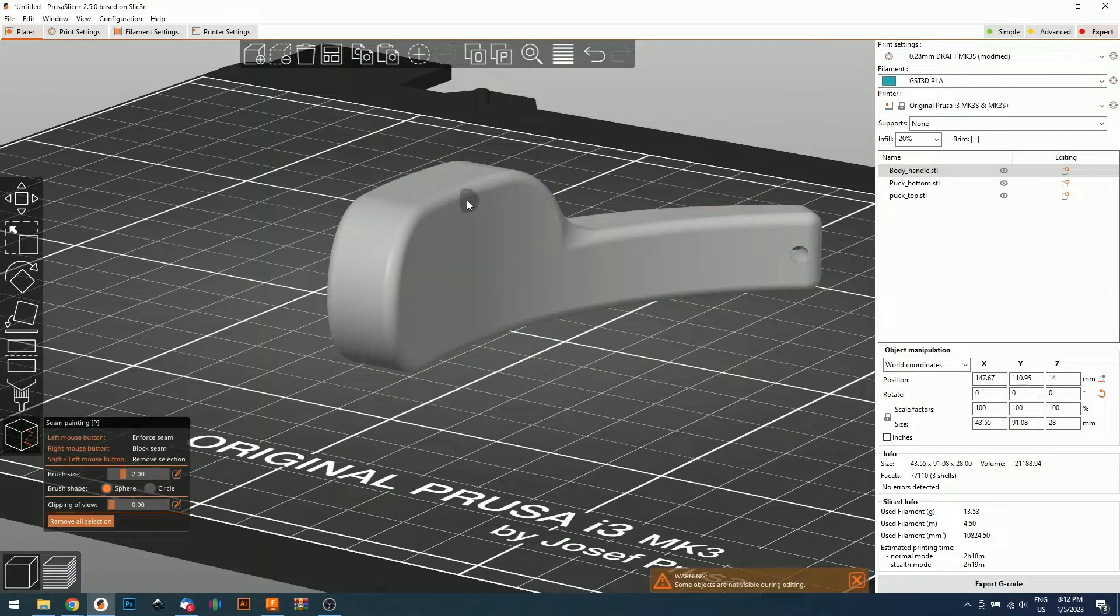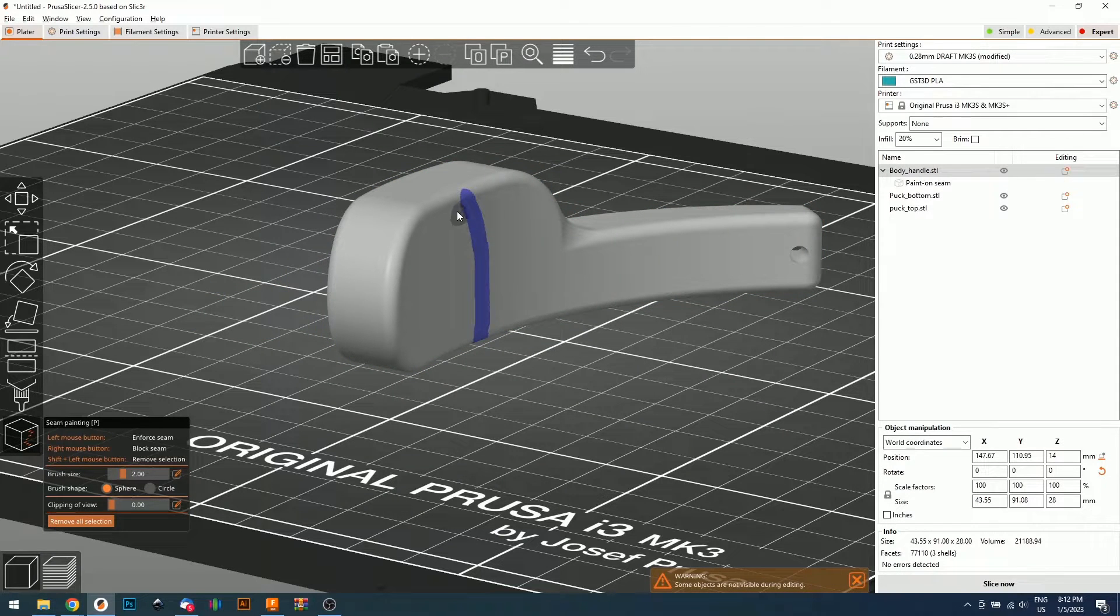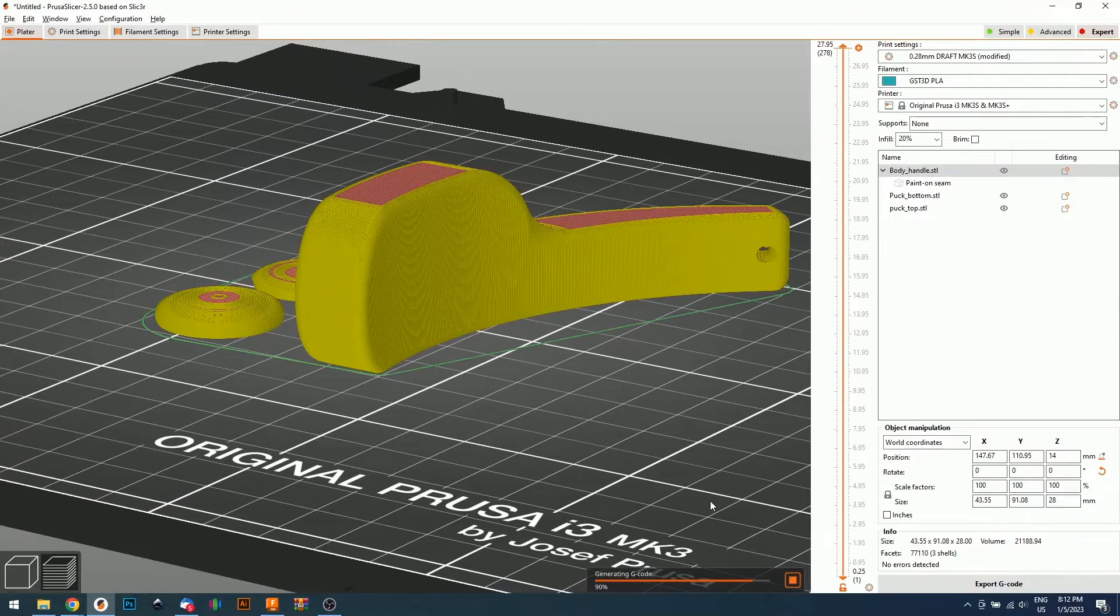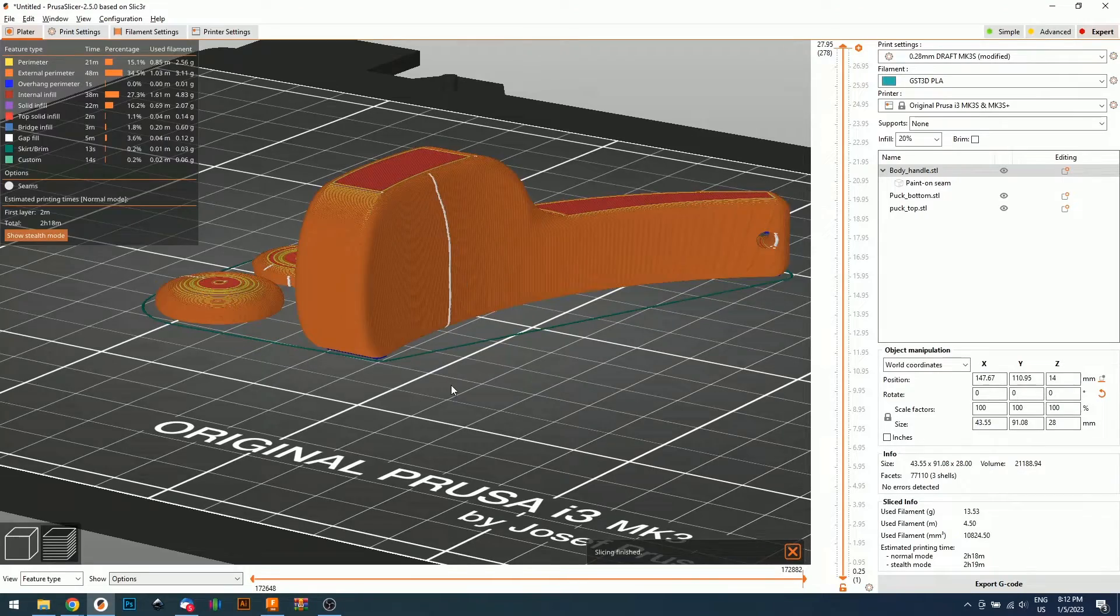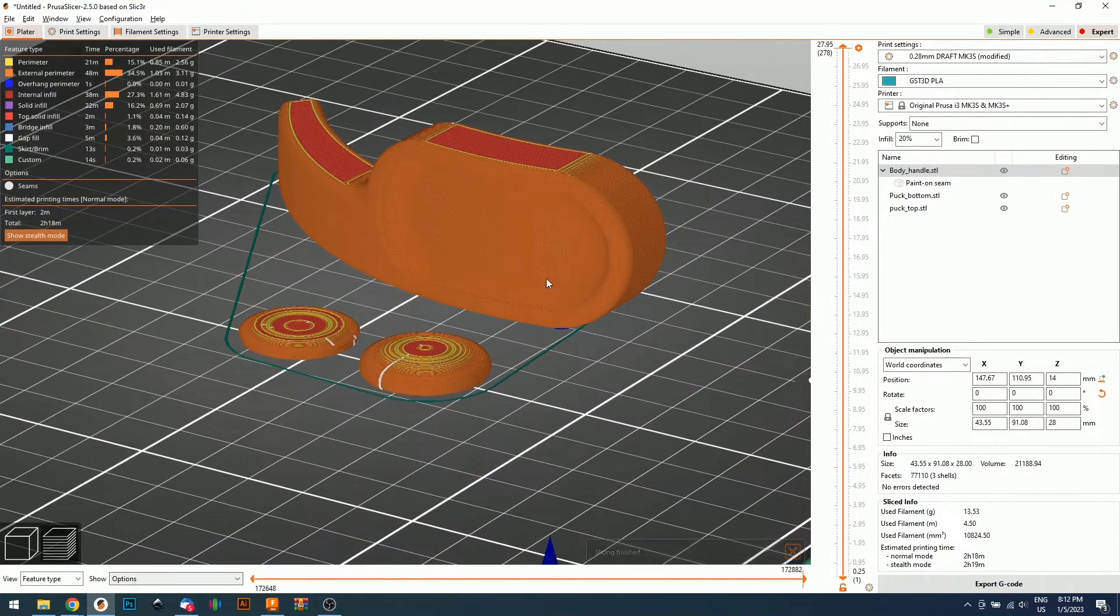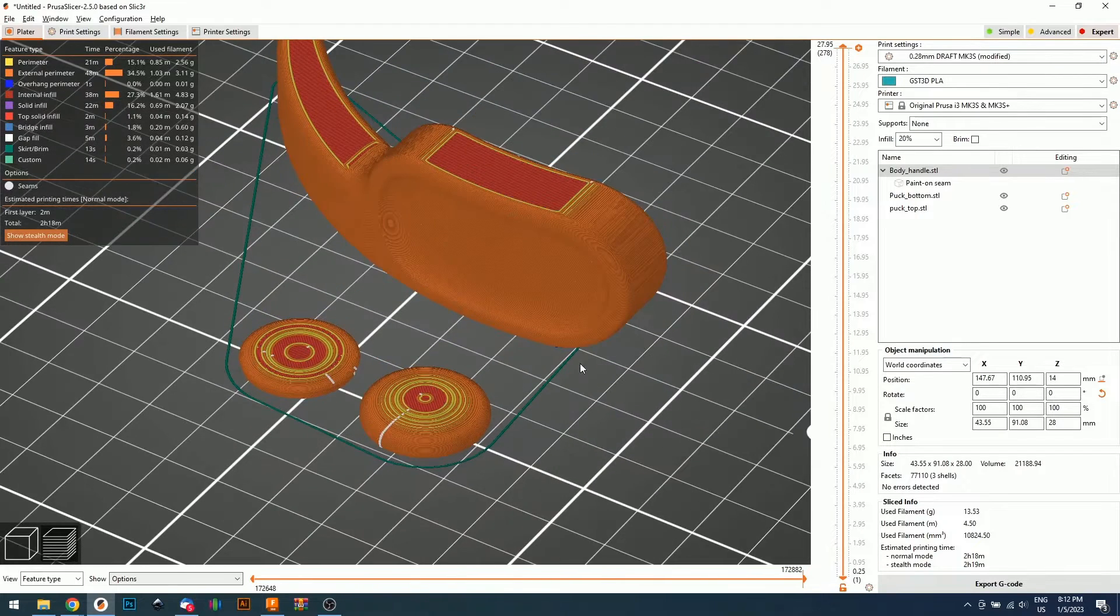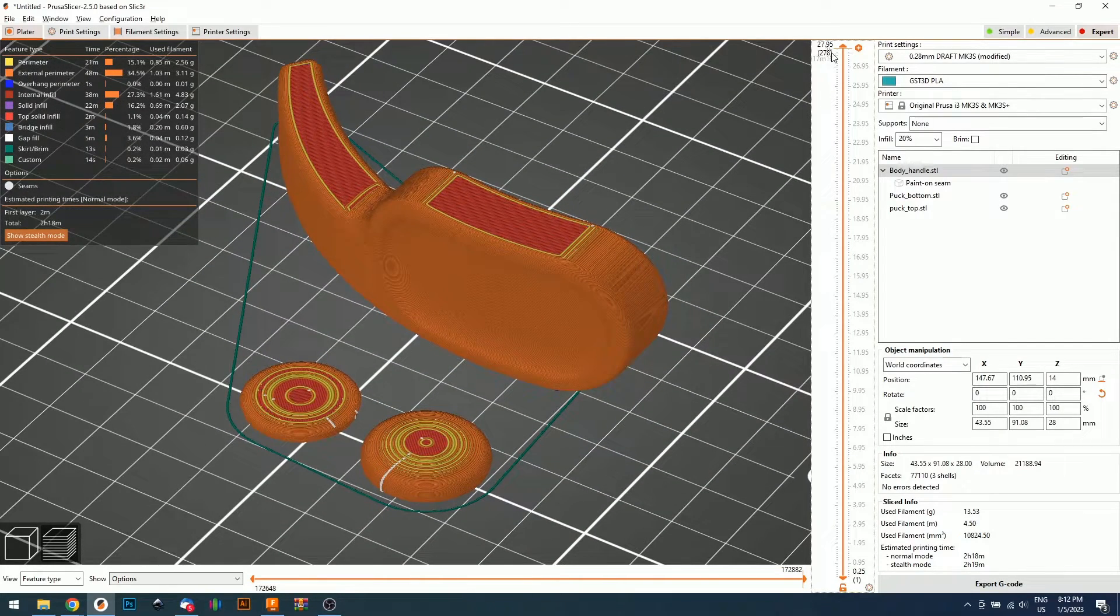PrusaSlicer has a really handy feature that lets you draw where you want the seam to be. So if I slice this again, now the seam is going to appear here on the back and the sliding area is seam free. So that is one of the things that we need to check.